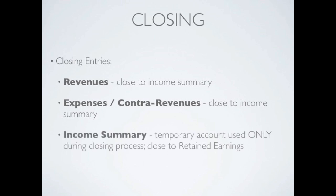Once we've closed our revenues and expenses, we do not want to keep an income summary — we want to close that account out. Remember, the income summary is a temporary account used only during the closing process. If we have a credit balance in the income summary that's net income, because revenues exceed expenses and contra revenues. A debit balance would indicate a net loss. Once we close the income summary, we will close our dividends to retained earnings. Remember, dividends is not an expense account — it just reduces retained earnings.